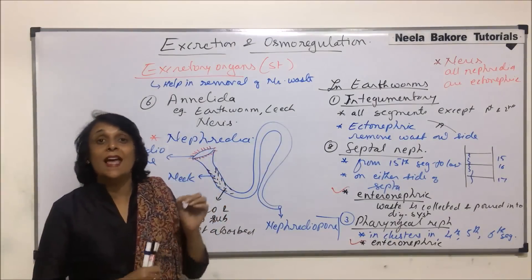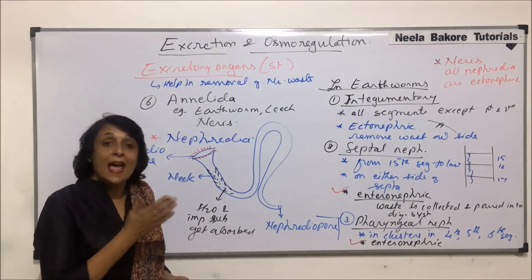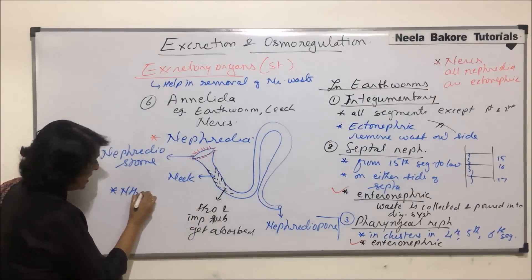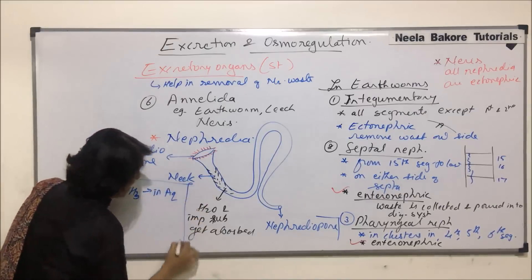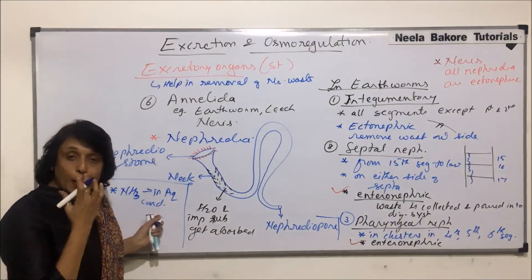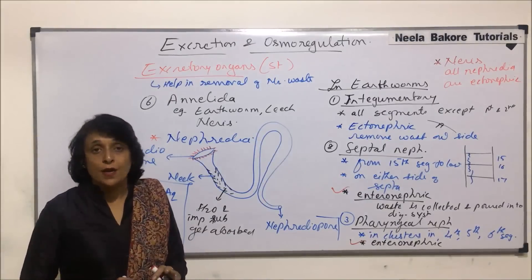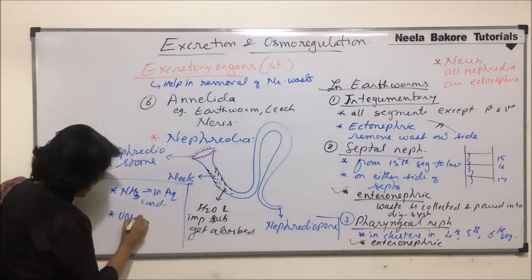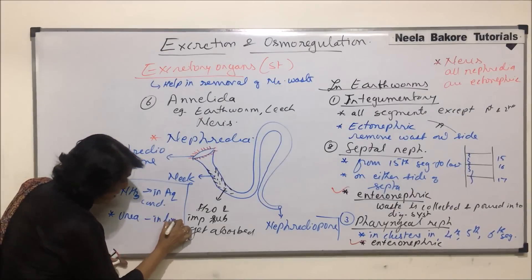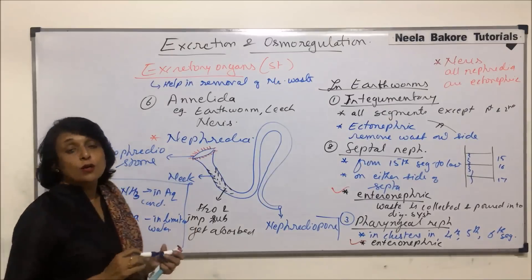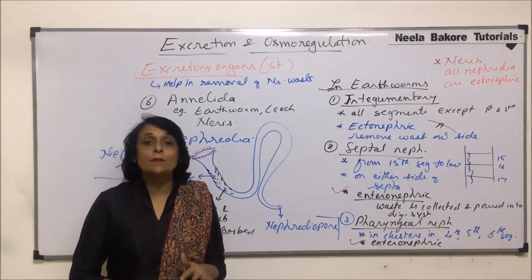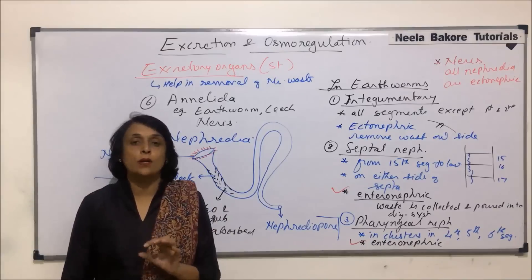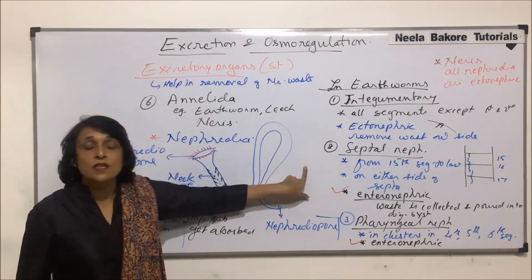The substance being eliminated depends on the mode of life. If annelids are in aquatic conditions, they eliminate ammonia, making them ammonotelic. If there is a limitation of water, as in the case of earthworm in limited water conditions, they become ureotelic and eliminate urea. So their elimination of waste also depends on the availability of water.